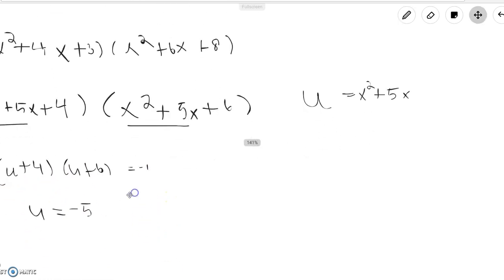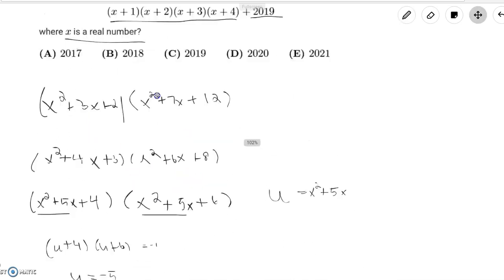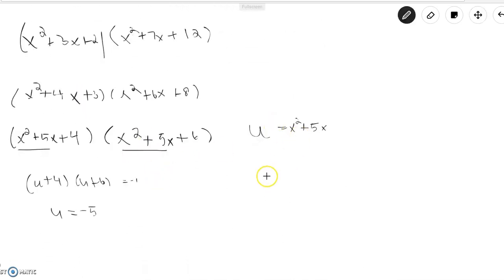Since u equals negative 5, we also have the condition that x is a real number, so we want to check that x is real in this condition. If you plug in negative 5 into this expression, you'll get x²+5x = -5, or x²+5x+5 = 0.